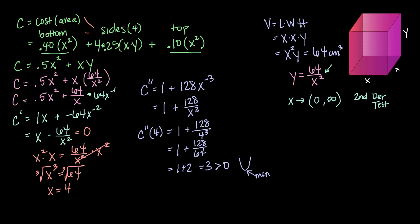This means that we have found at least the x dimension of the box that has the least cost. So if x is equal to 4 centimeters, we need to figure out what would y be then? Well, we have here our function of y in terms of x. So that would be 64 divided by 4 squared, or 64 divided by 16 is 4 centimeters. So the box with the least cost is actually a cube, a 4 centimeter by 4 centimeter by 4 centimeter box.